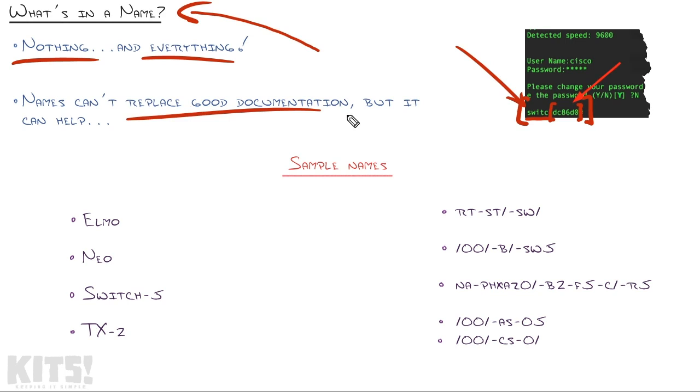Now, in the same token, there is no golden rule of naming. There's no best practice that you'll find on the internet of here's what you should name all your devices. But there are some naming conventions that are better than others. These first two names are themes, meaning the network administrator either likes Sesame Street or The Matrix, and so they started naming their network devices after characters.